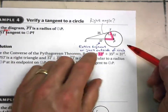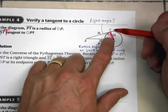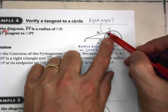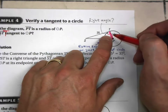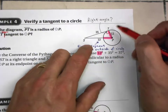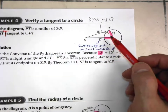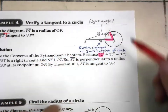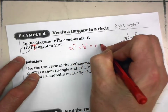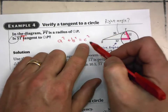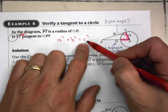To determine whether ST is tangent, we check if it's perpendicular to the radius using the Pythagorean theorem: A² + B² = C², where C is always the hypotenuse. So we ask: is there a right angle here? If so, the longest side — across from it — is the hypotenuse.